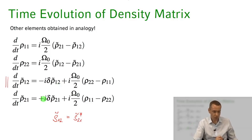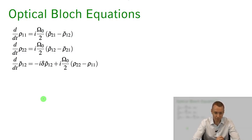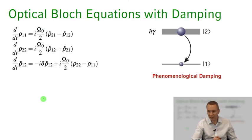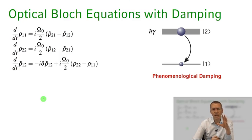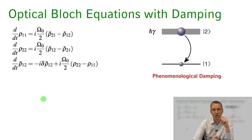One major advantage of the density matrix formalism is that we can bring in something we couldn't incorporate in a consistent way in the Schrödinger state formalism: damping of the system. I'll go a little bit ahead and describe a few phenomena that can happen in this two-level system before we have a firm footing on what they actually are.